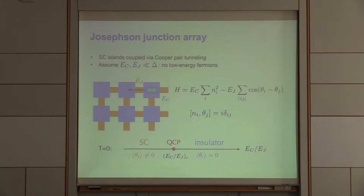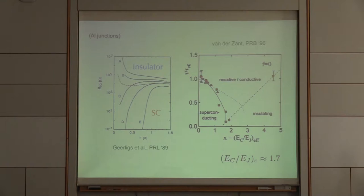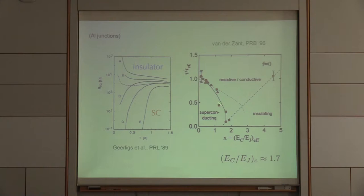If one term is much larger than the other, we have two separate phases. If the charging energy dominates, we have the insulating phase where the Josephson phase fluctuates wildly. If the Josephson energy dominates, the phase locks and we have a superconductor. In between, there's an intervening quantum critical point at zero temperature at some critical value of the ratio EC over EJ. This has been observed experimentally by preparing arrays with various amounts of disorder to tune the Josephson coupling, mapping out the phase diagram as a function of temperature and EC over EJ.